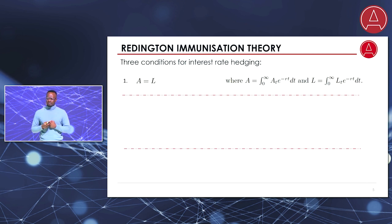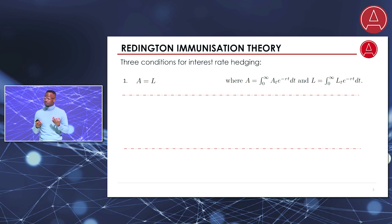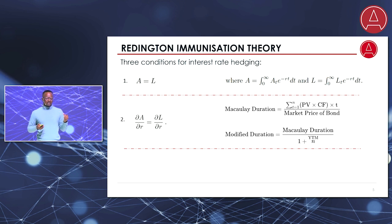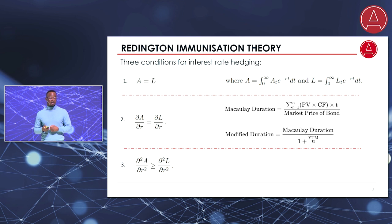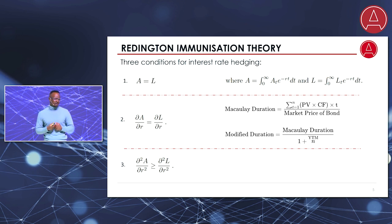Back to Frank Reddington. His theory put forward that there are three conditions we need to meet in order to hedge our liability portfolio from interest rate movements. The first is that the present value of assets must equal the present value of liabilities. The second is that the duration of assets must meet the duration of liabilities — this is the most important condition. The third condition is that the convexity of assets must be greater than the convexity of liabilities. This theory has been the bedrock of ALM for the past half century.